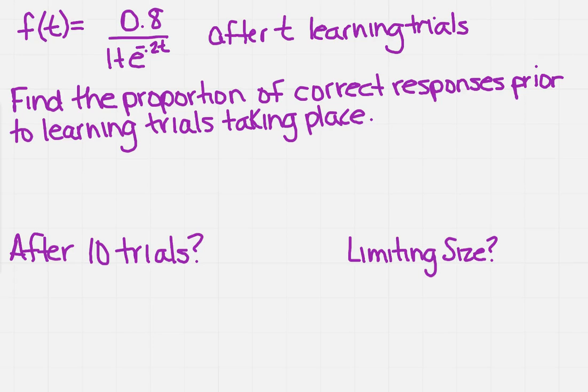Let's say that we're given f of t equals 0.8 over 1 plus e to the negative 0.2t. This is in regards to a learning theory project after t learning trials.